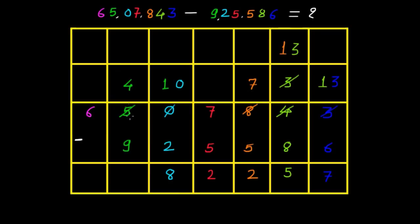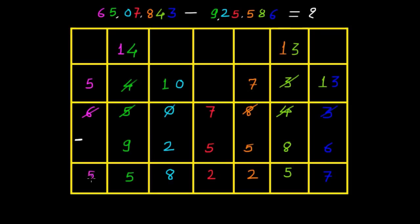Now 4 minus 9 is not possible because 4 is the smaller number, so again we have to borrow 1 from the next level. This 6 becomes 5, we cross the 4 and it becomes 14. Now 14 minus 9 is 5, and 5 minus nothing is 5. So the final answer is 55,82,257.